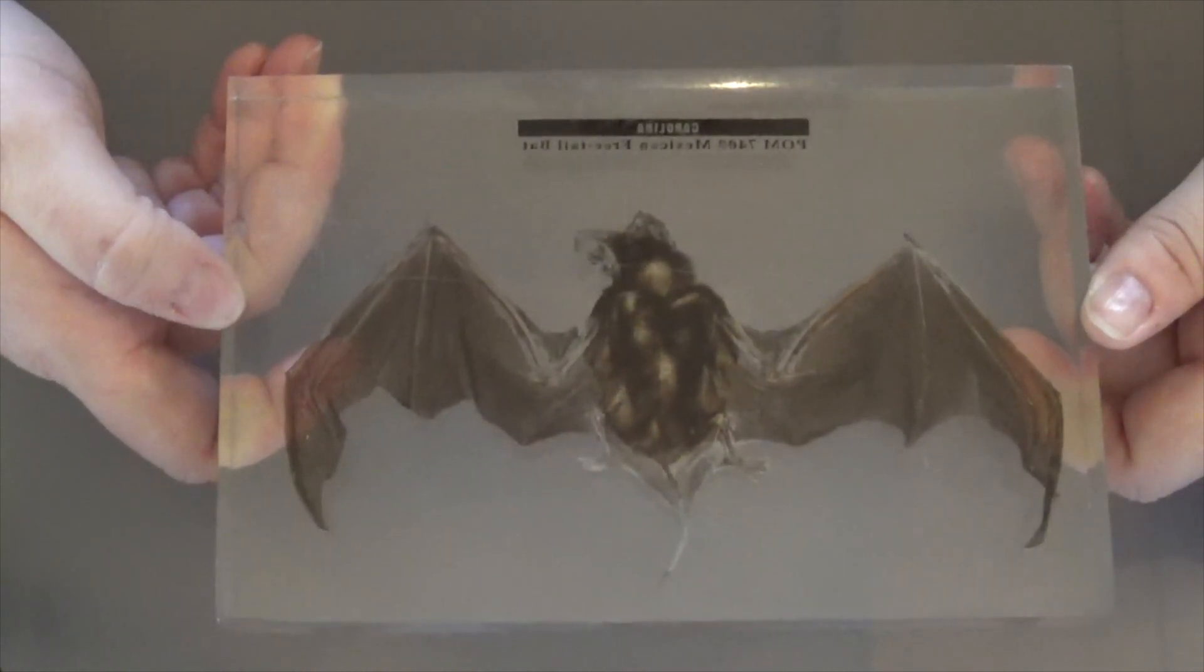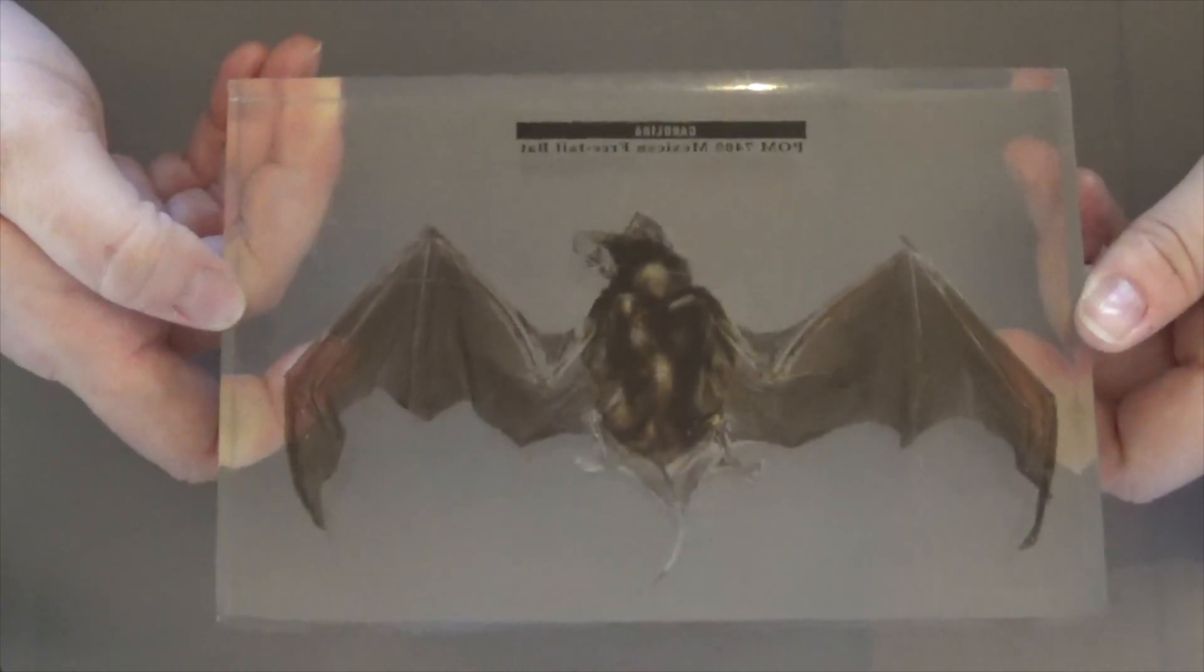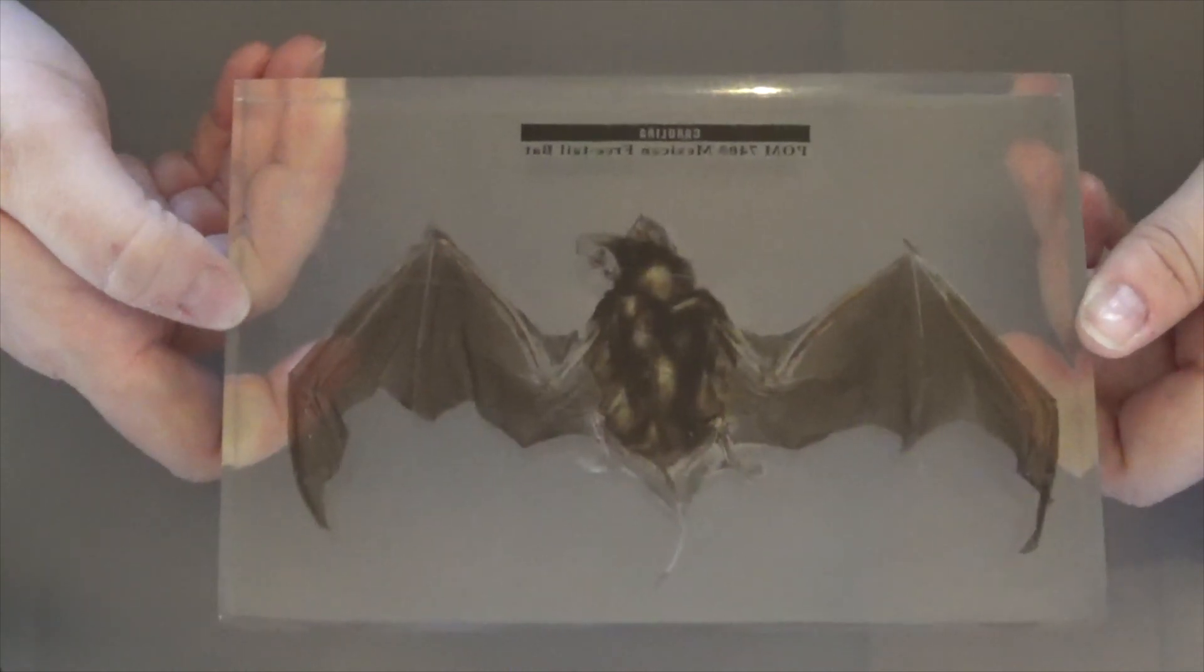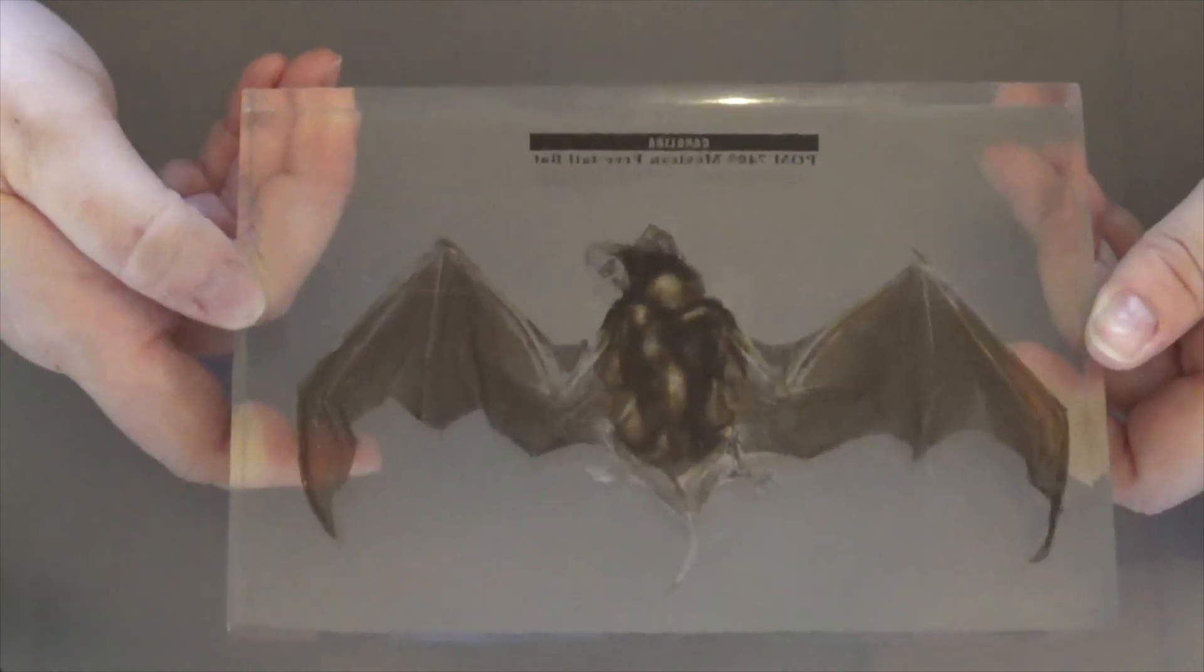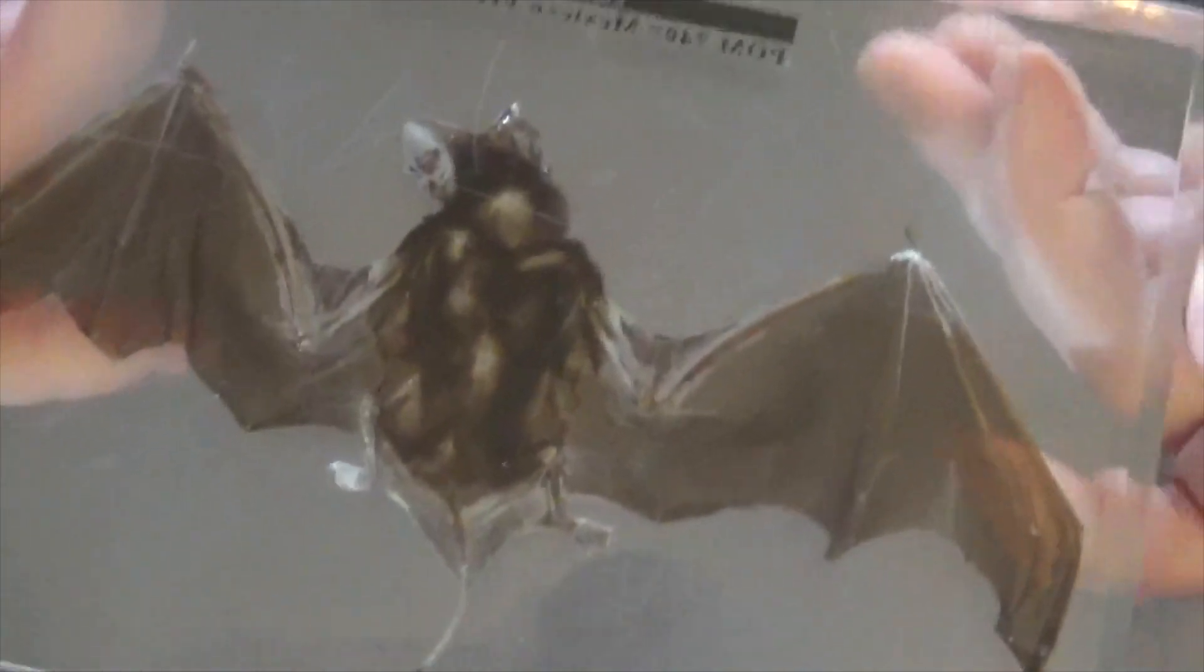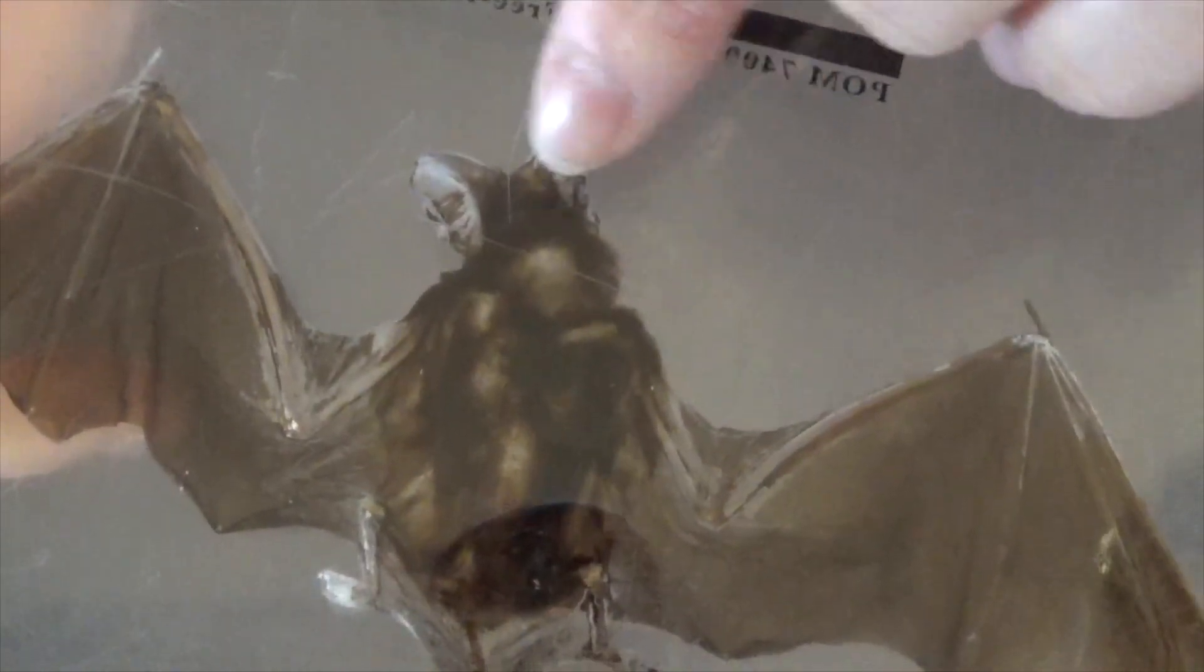Bats actually use something called echolocation, which is the same thing that dolphins use underwater. They use it to be able to almost see at night. If you can see here, I may need to get a different bat.